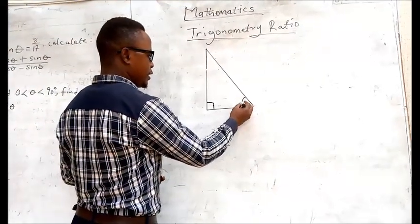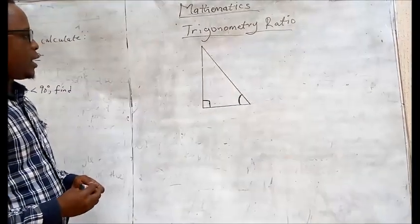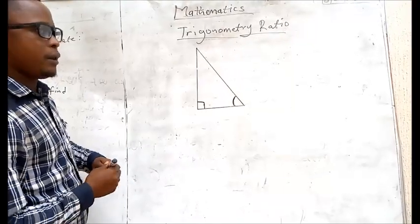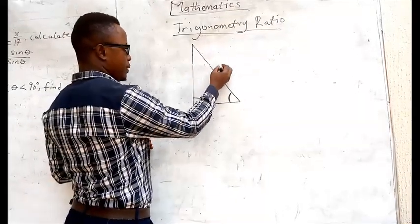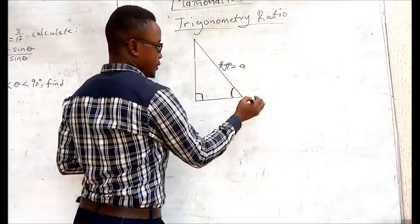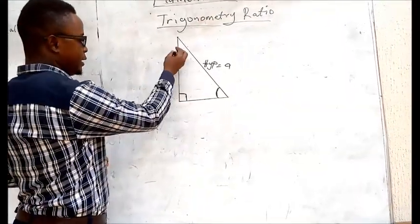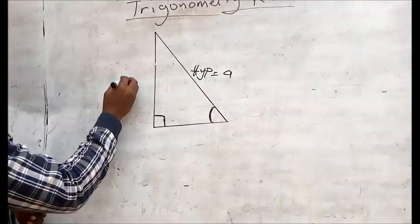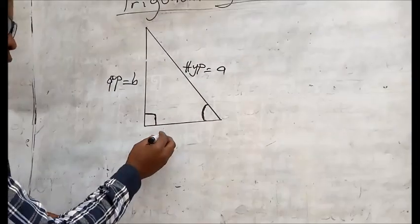Now we can label them. This is a given angle. According to the right angle triangle, the side facing the right angle is called the hypotenuse — let's call it A. Then the side facing the given angle is called the opposite — let's say it's B. And the other side will be our adjacent.